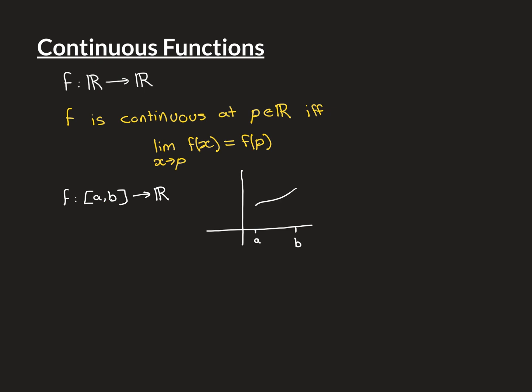The intuitive notion of continuity from calculus is that you're able to draw the graphical representation of the function without taking your pen off the piece of paper. You start at (a, f(a)) and get to (b, f(b)), and you'd be able to draw this line without having to stop, lift your pen, and go somewhere else — you can draw it as one continuous line. We want to understand why the definition being true for all p in [a, b] corresponds to this intuitive notion.